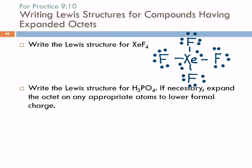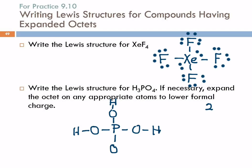Let's look at phosphoric acid. We have phosphorus surrounded by oxygen, and each of the oxygens except one is going to have a hydrogen. We've got 24 valence electrons from the oxygens, phosphorus has five, and then three from the hydrogens — so that's 32 total.